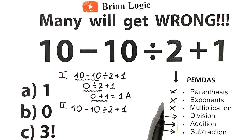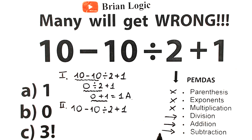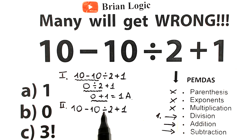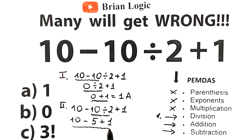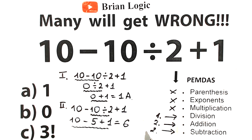According to PEMDAS working from top to bottom, division has higher priority than addition and subtraction, so division is our first step. We look for the division sign — it's in the middle: 10 divided by 2 equals 5. So the expression becomes 10 minus 5 plus 1. Addition and subtraction have the same priority, so it doesn't matter which you do first: 10 minus 5 equals 5, and 5 plus 1 equals 6.